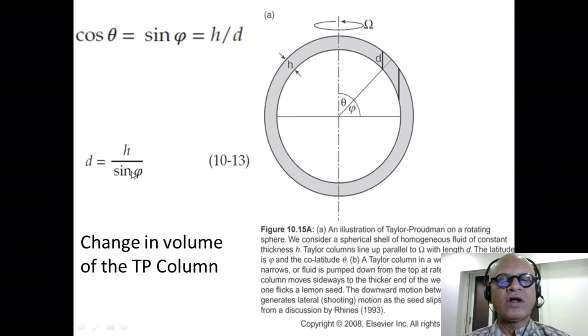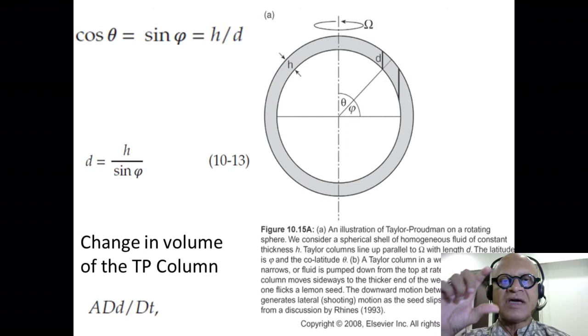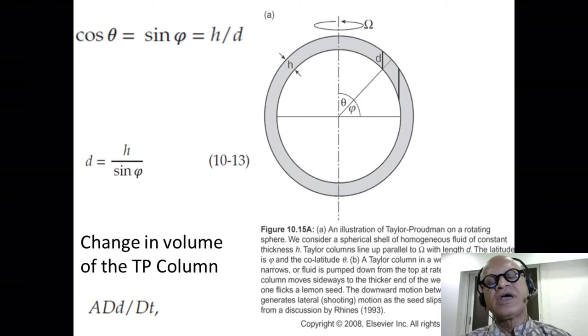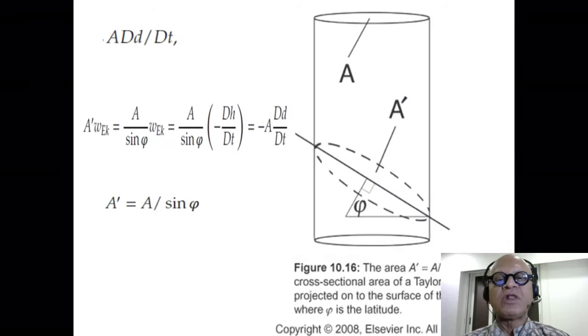Now we have to look for Ekman pumping. Area times dD/dt—we said the Taylor column can stretch and satisfy the Taylor-Proudman theorem in this case with Ekman pumping. How will it work? Look at this Taylor column now parallel to the axis of rotation with an area A, but when you look at the local vertical, then you have an area A' which is perpendicular to this latitude line that we have shown.